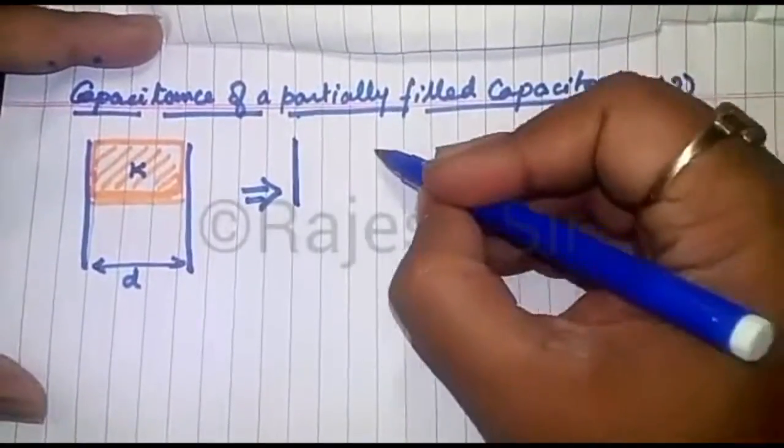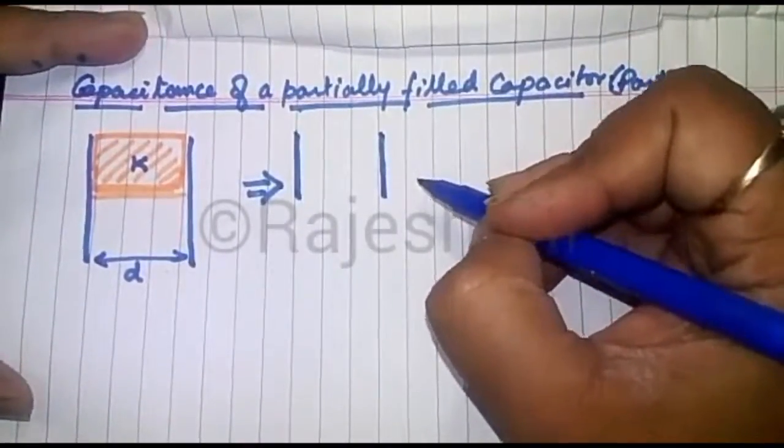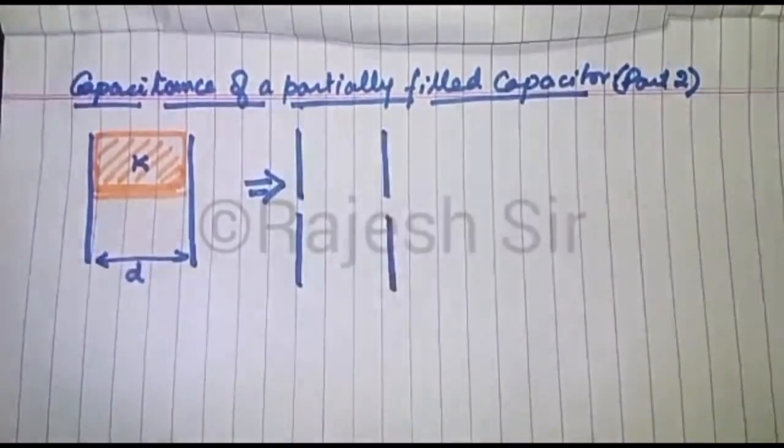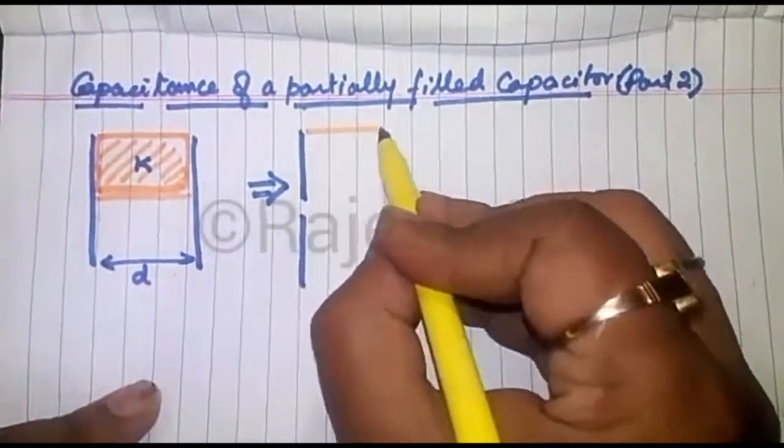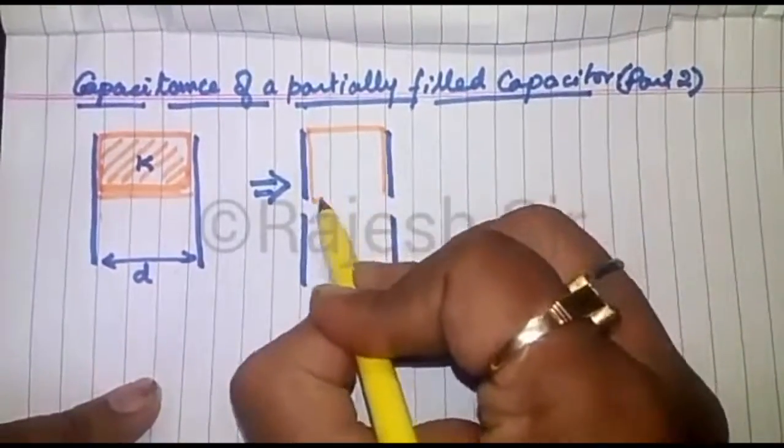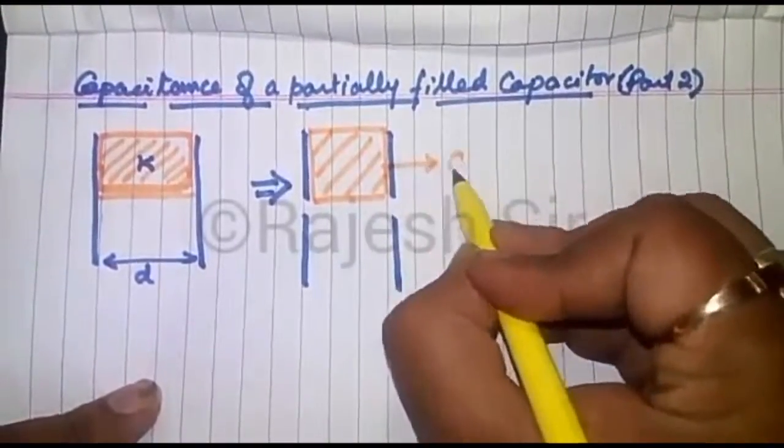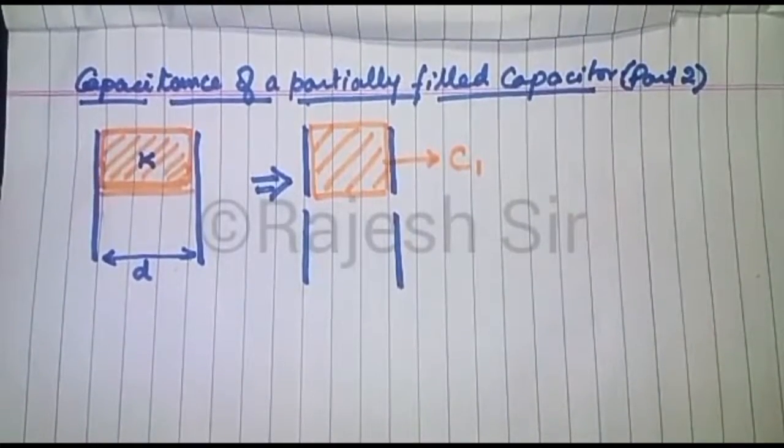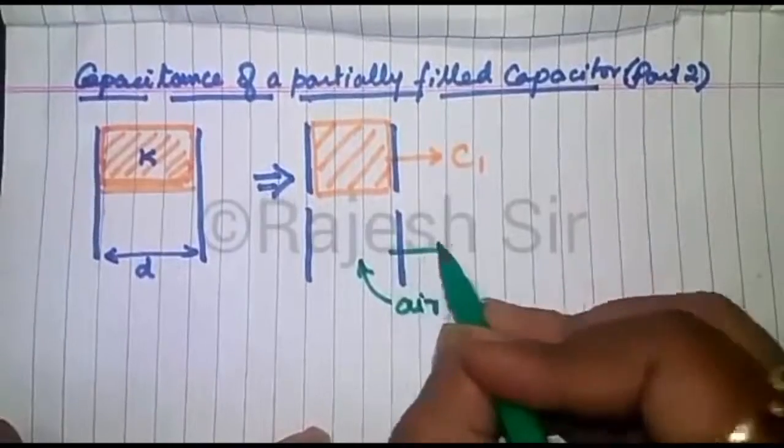So what you can do, you can think this capacitor as a combo of two capacitors, one which is completely filled with a dielectric, let me call this capacitor C1, and another which is air filled. This one is air filled and let me call this one C2.